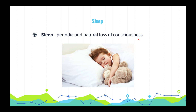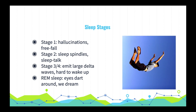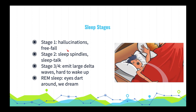Approximately every 90 minutes we complete a cycle through the five distinct stages. Stage one: we experience hallucinations, sometimes the sensation of free-falling. Stage two: we experience sleep spindles, which are bursts of rapid brainwave activity, and we also sleep talk.